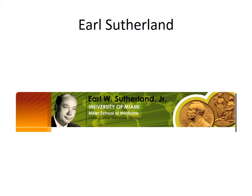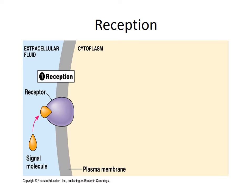The first step is reception. In our telephone analogy, this would be like the telephone ringing. In the cell, a signal molecule transmitted either in the cytosol, bloodstream, or somewhere similar will attach to a receptor protein — that's what you see right up here. It's a receptor protein.